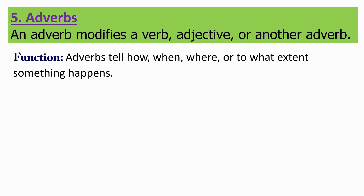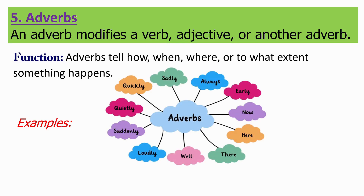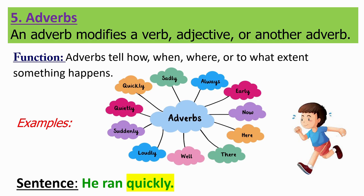Now let's check the fifth part of speech: adverbs. An adverb modifies a verb, adjective, or another adverb. Adverbs tell how, when, where, or to what extent something happens. For examples: quickly, sadly, always, early, now, here, there, well, loudly, suddenly, quietly, etc. Now let's check a sentence: "He ran quickly." In this sentence, the word quickly modifies the verb ran.